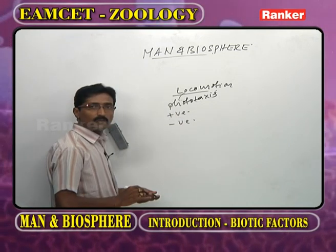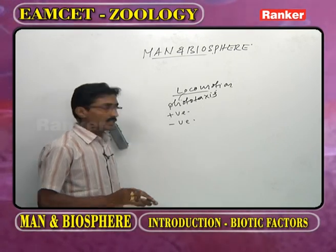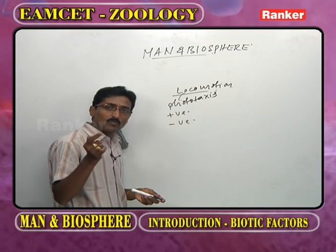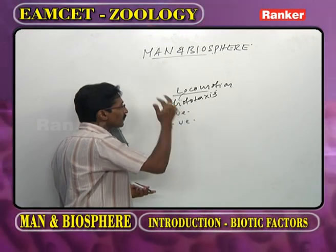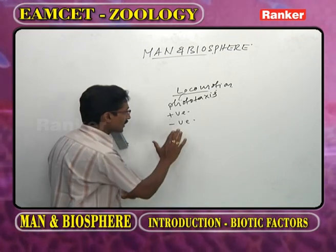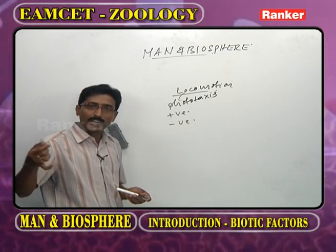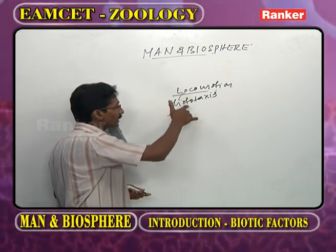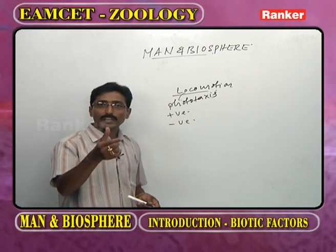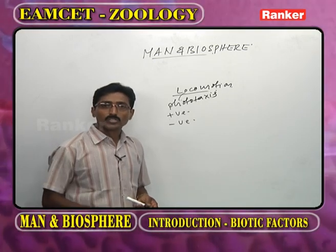Positive photo taxes means the animal moves towards the light. One best example is Euglena. Negative photo taxes means the animal moves away from the light. Examples of negative photo taxes include Planaria, earthworm, and cockroach.